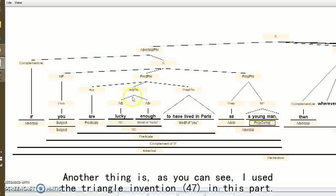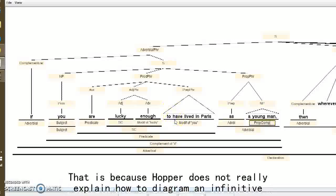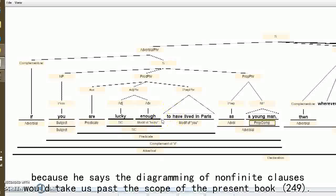Another thing is, as you can see, I used the triangle invention in this part. This is because Hopper does not really explain how to diagram an infinitive, because he says the diagramming of non-finite clauses would take us past the scope of the present book.